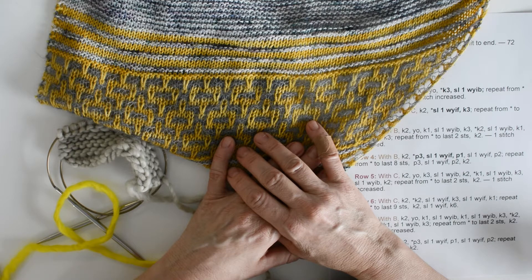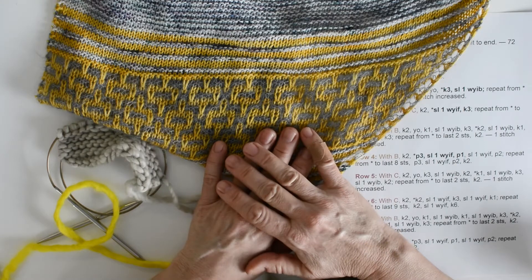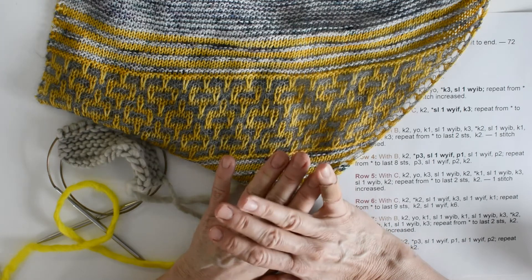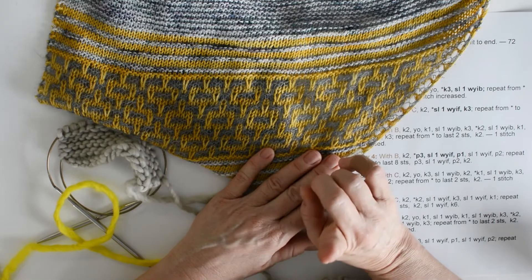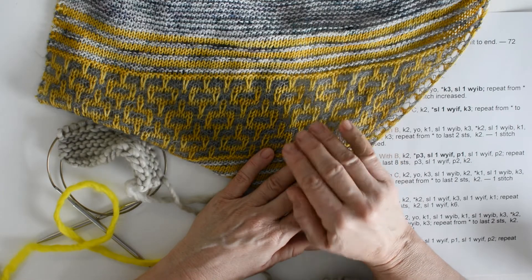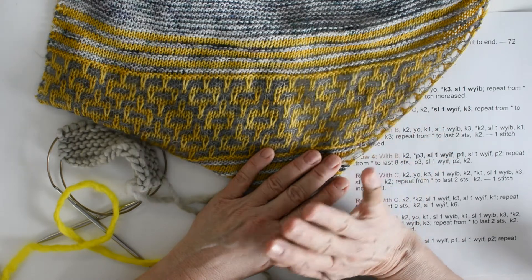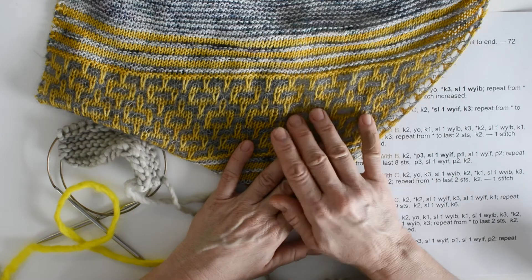One thing I love about mosaic knitting is you get this beautiful two-color patterning without having to carry two yarns at a time. It's as simple as working stripes, well almost as simple as working stripes. We're using one color on each row, and we're simply knitting some stitches and slipping other stitches.